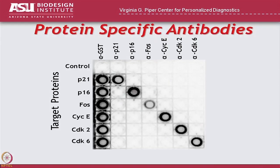Here, what we're looking at is just making proteins using cell-free extract in the wells of a 96-well dish. The proteins we make all have a GST tag at the C terminus — remember we talked about always having to have a tag. So if we make the protein in these wells and probe them with an antibody that recognizes the tag, they all light up. But if we probe them with antibodies specific to each individual protein, then only P21 lights up at P21, only P16 lights up at P16, only FOS and so forth.